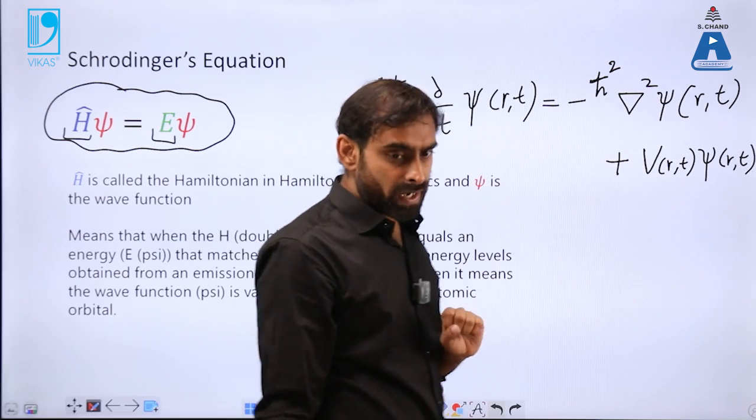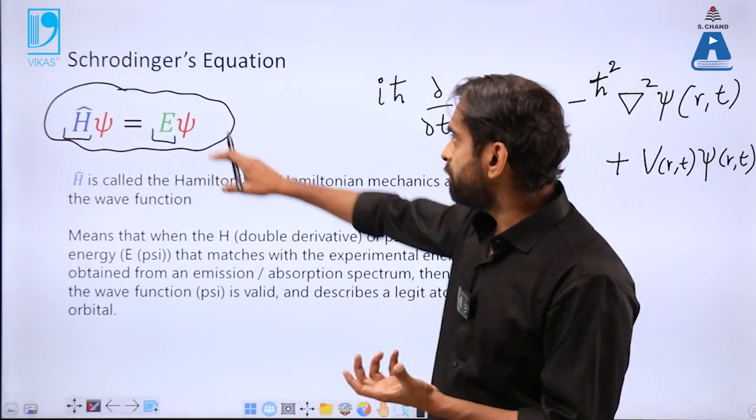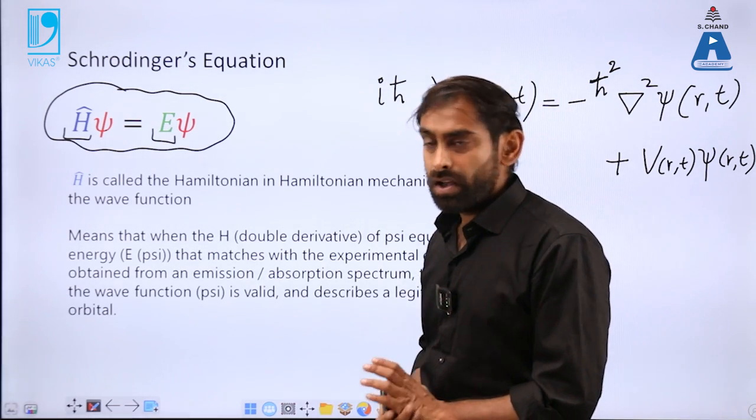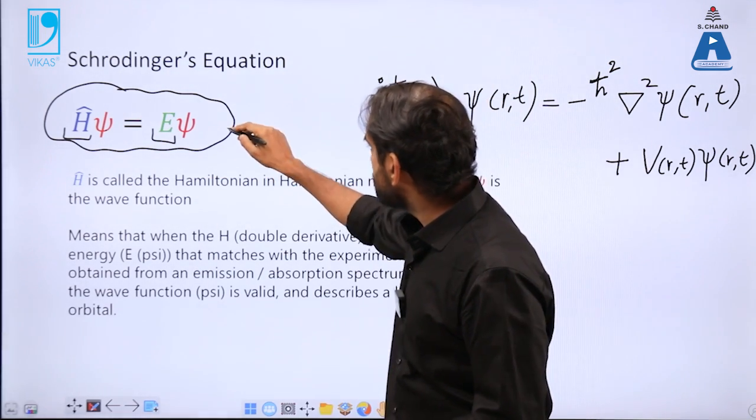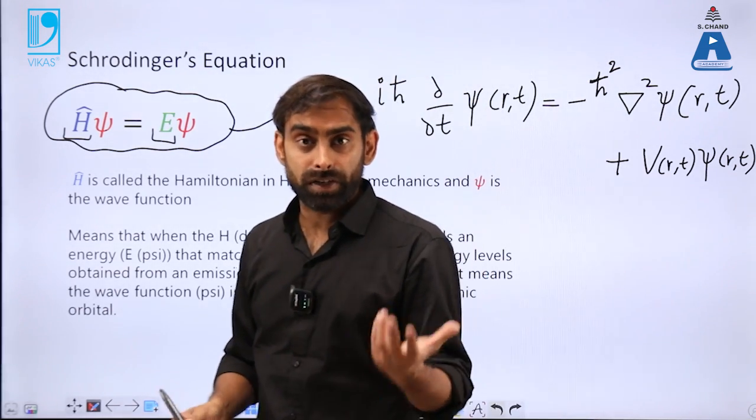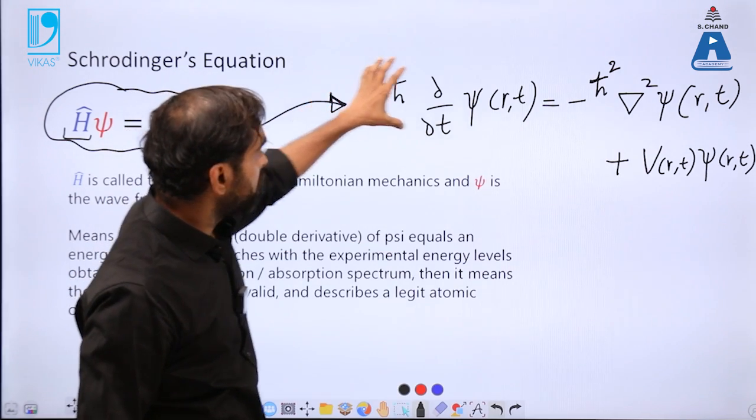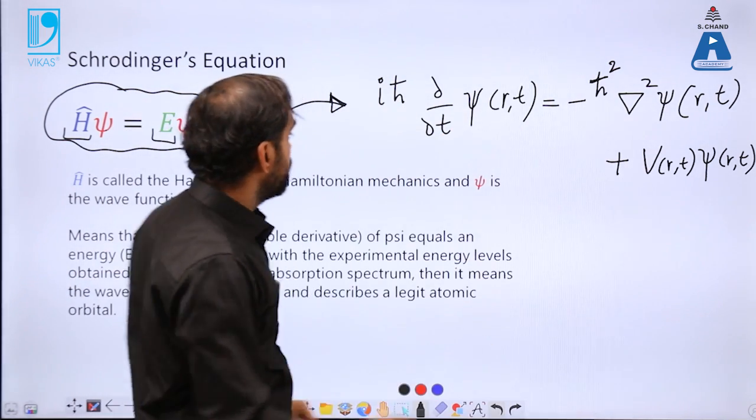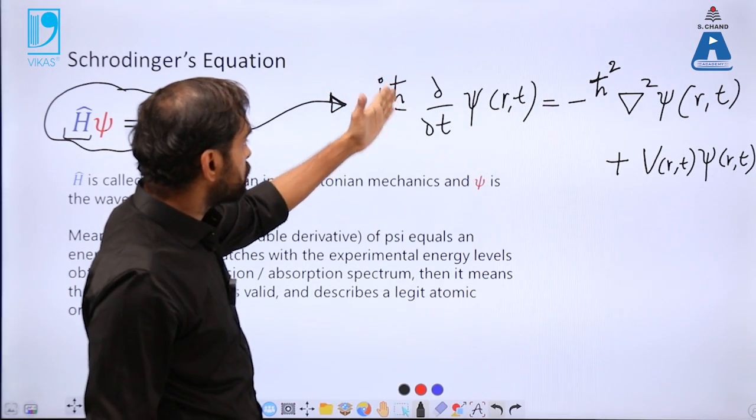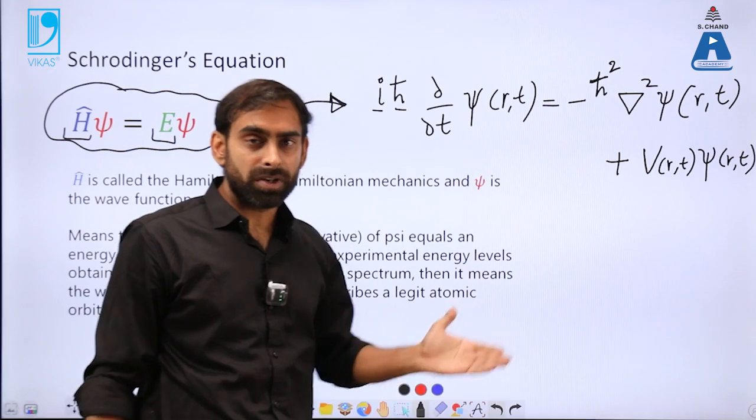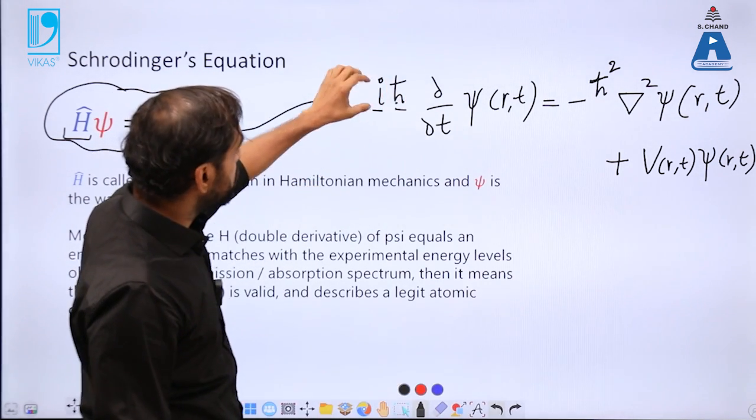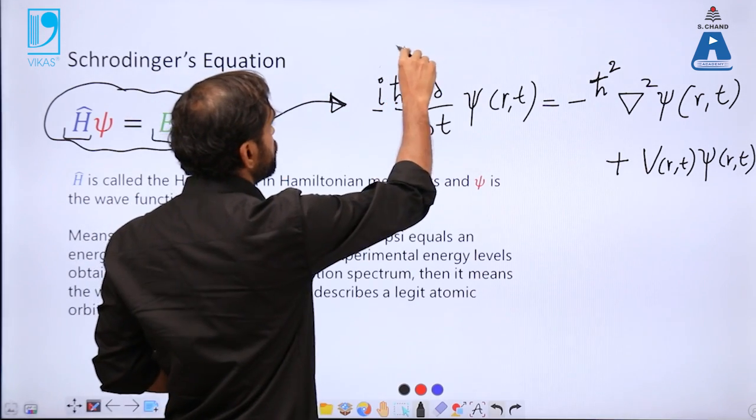But this equation given by Schrödinger does not have a time factor, so we basically call this equation time-independent Schrödinger equation. Whereas this equation can be mathematically transformed, and we can write it in a time-dependent manner like this: iℏ∂ψ/∂t. This is Planck's constant divided by 2π, called reduced Planck's constant. This is an imaginary number, equivalent of square root of minus one.